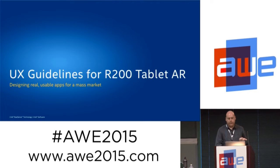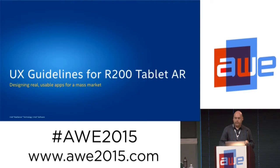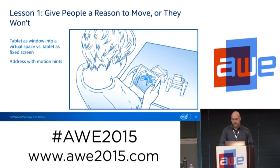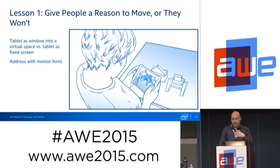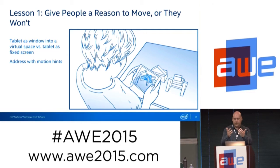Now I'll talk about a few lessons we've learned from user studies with this type of app. Intel is going for real, usable apps with mass market appeal that will ship with these tablets and be available in app stores. One of the first things we learned: all of us are familiar with the magic window experience where you move a tablet or phone around to see a rendered view from a different perspective. But this is really foreign to regular people — they don't move, they don't quite get the idea. So giving effective instructions is an important part of the design.